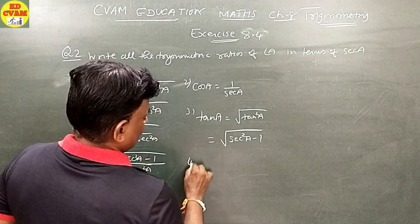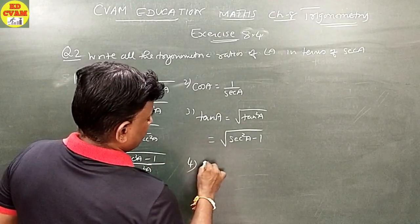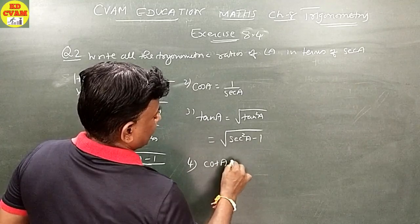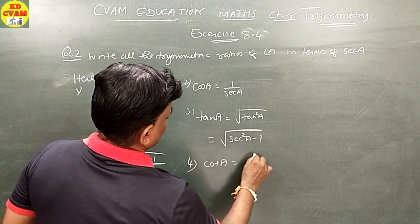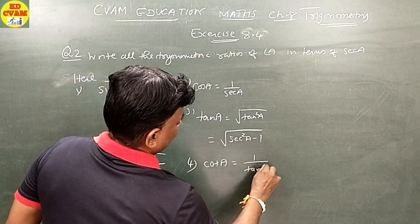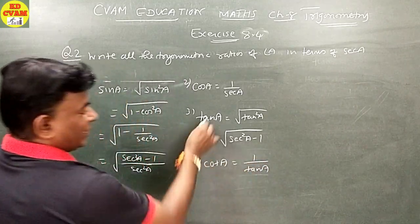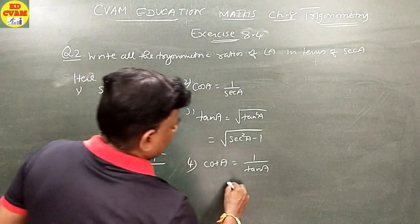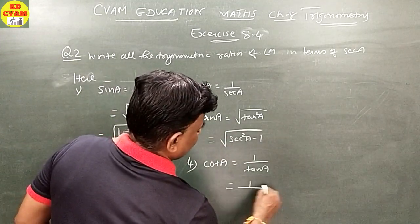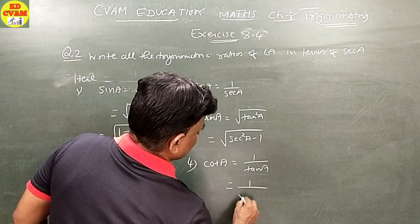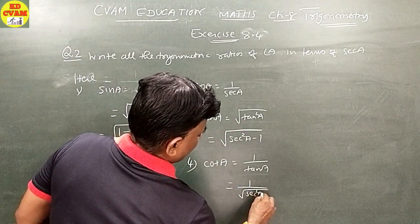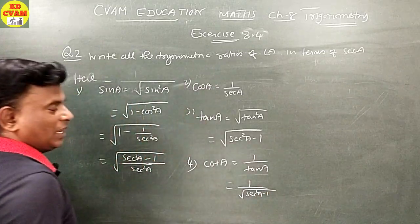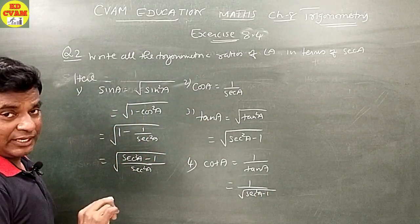Now cot A: cot A equals one upon tan A, which means the answer from tan A goes to the denominator. So cot A equals one upon square root of sec squared A minus 1.